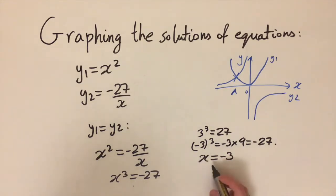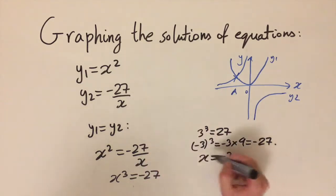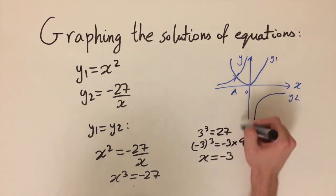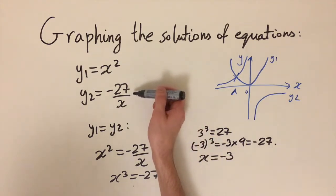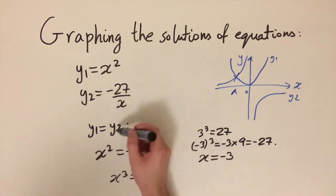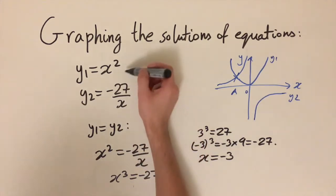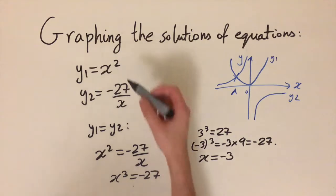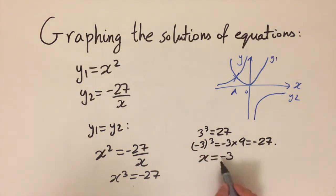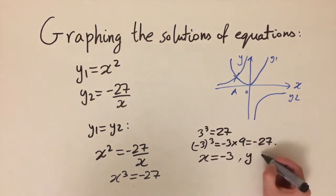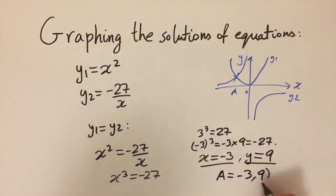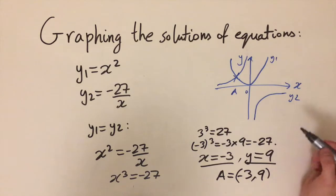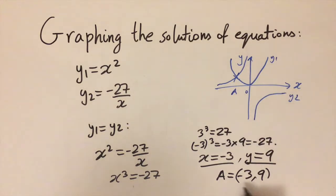The next step is to find the corresponding y value. Substituting x equals minus 3 into y1 gives y equals (minus 3) squared, which is 9. So the solution is the single coordinate A equals (minus 3, 9) — this is the one place where the two graphs intersect.